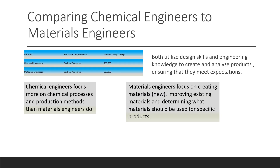The education requirements for chemical engineering and materials engineering are the same — you need a bachelor's degree for either one. The median salary for each is around the same, with chemical engineering being a bit higher at $98,000 while materials science engineering is at $93,000.